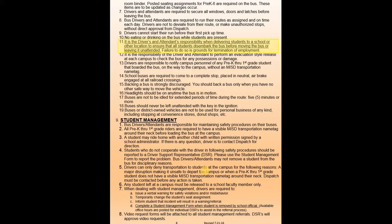This is especially important if you're driving younger students, particularly middle school grades — we want to make sure nobody's falling asleep on the bus. School buses are required to come to a complete stop, placed in neutral, and air brake engaged at all railroad crossings. When you go through your training further along, we'll teach you the full requirement process for this, but please know that when you approach a railroad crossing, you need to come to a complete stop, put that bus in neutral, and engage the air brake at minimum. Please do not ever cross a railroad track without following this safety procedure.